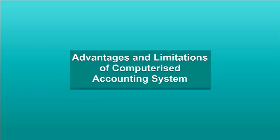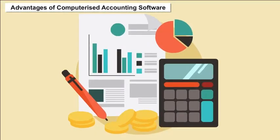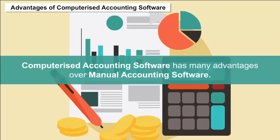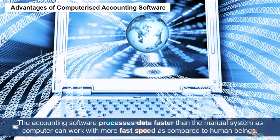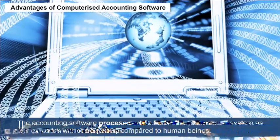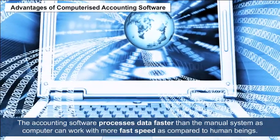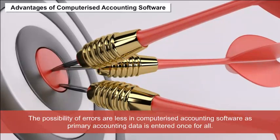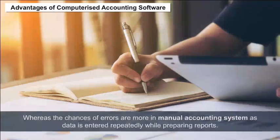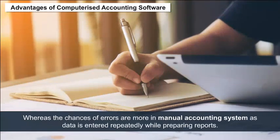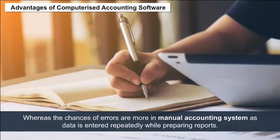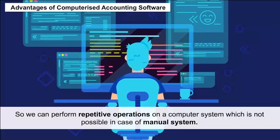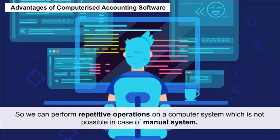Advantages of computerized accounting software. Computerized accounting software has many advantages over manual accounting. Speed: accounting software processes data faster than the manual system, as computers work at much greater speed compared to human beings. Accuracy: the possibility of errors is less in computerized accounting software, as primary accounting data is entered once for all, whereas chances of errors are more in manual accounting as data is entered repeatedly while preparing reports. Reliability: a computer never gets tired or bored, so repetitive operations can be performed which is not possible in a manual system.